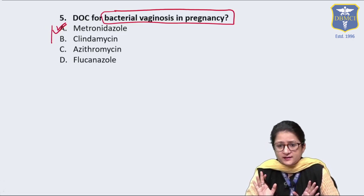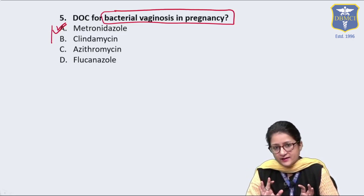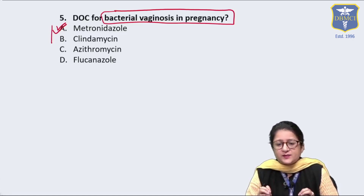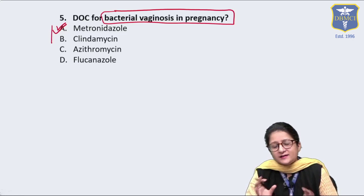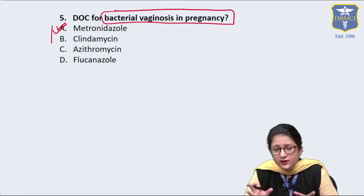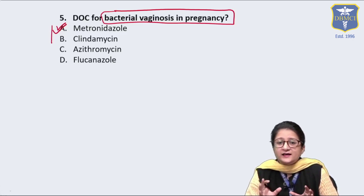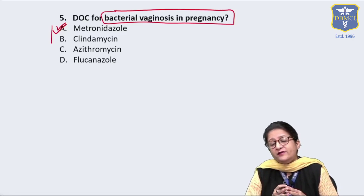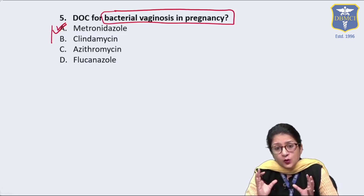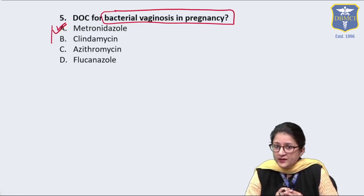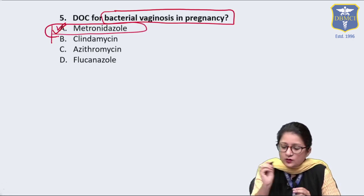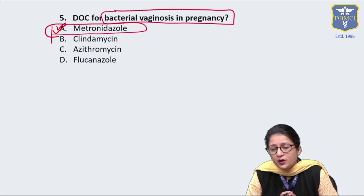None of the antibiotics are absolutely safe in pregnancy — all will cross the placenta or enter breast milk. We analyze the risk-benefit ratio. It has been established that treating bacterial vaginosis in pregnancy is beneficial, but only in symptomatic women. For that, we use metronidazole — the same drug as in non-pregnant women. Clindamycin is only an alternative.